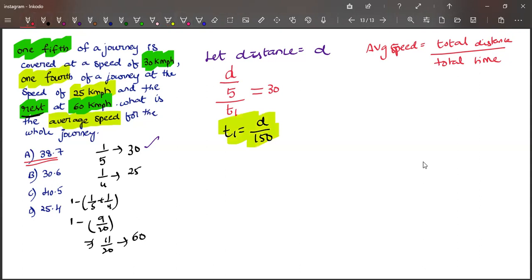The same way, second case: one fourth of the distance in t2 time at speed 25 kilometers per hour, which means t2 equals D by 100.